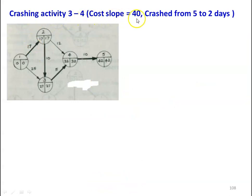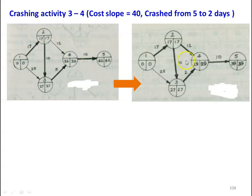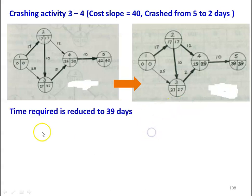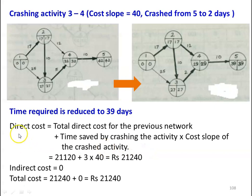Next, we crash activity 3-4 with cost slope 40, from 5 days to 2 days. The project duration is reduced to 39 days. Direct cost = 21,120 plus (3 days saved × 40) = 21,240. There is no indirect cost, so total cost equals 21,240.